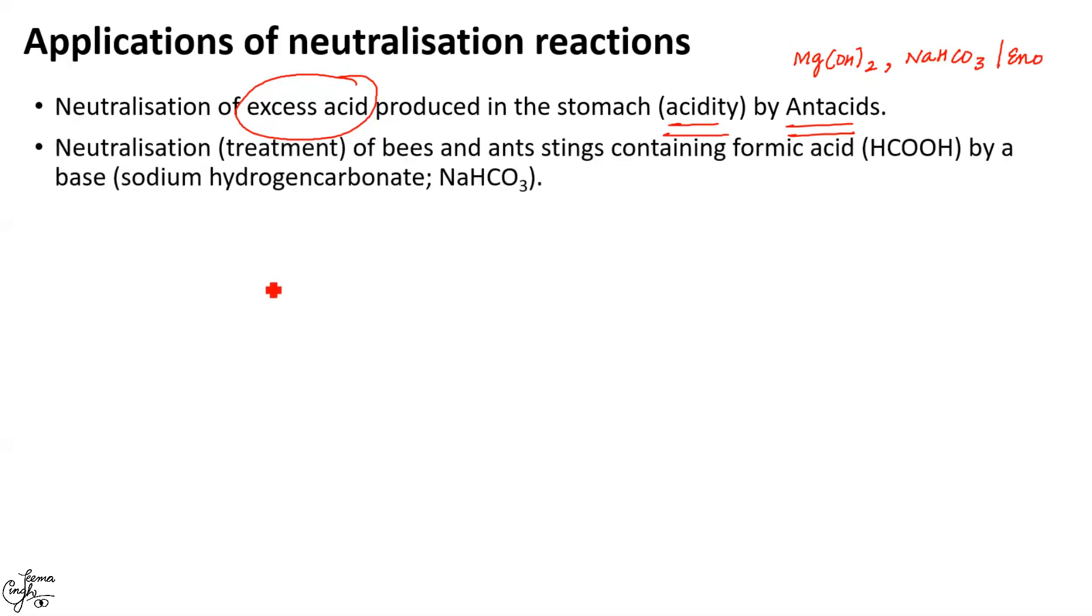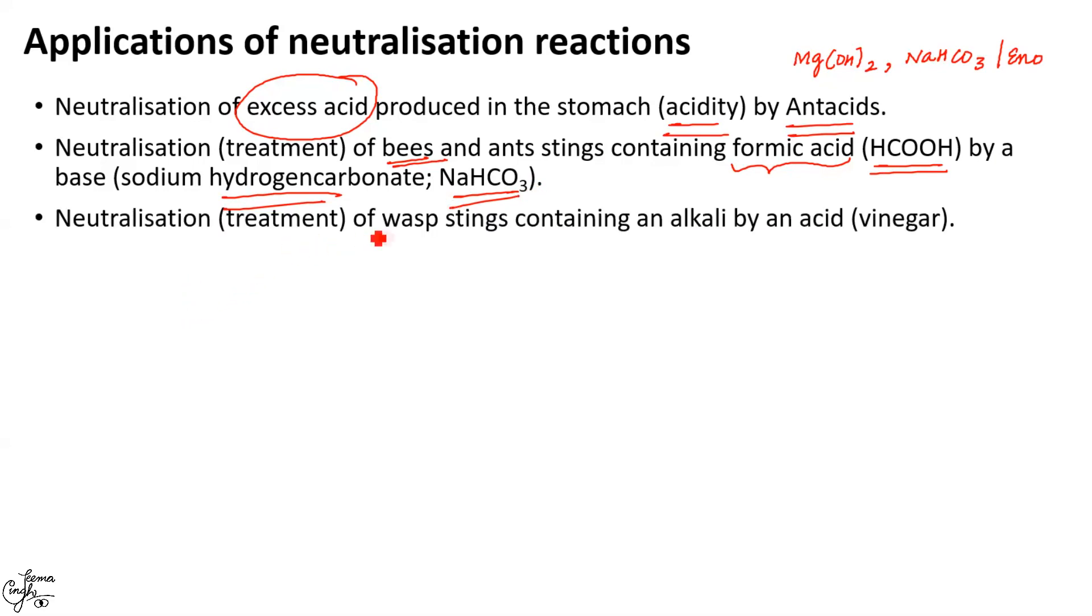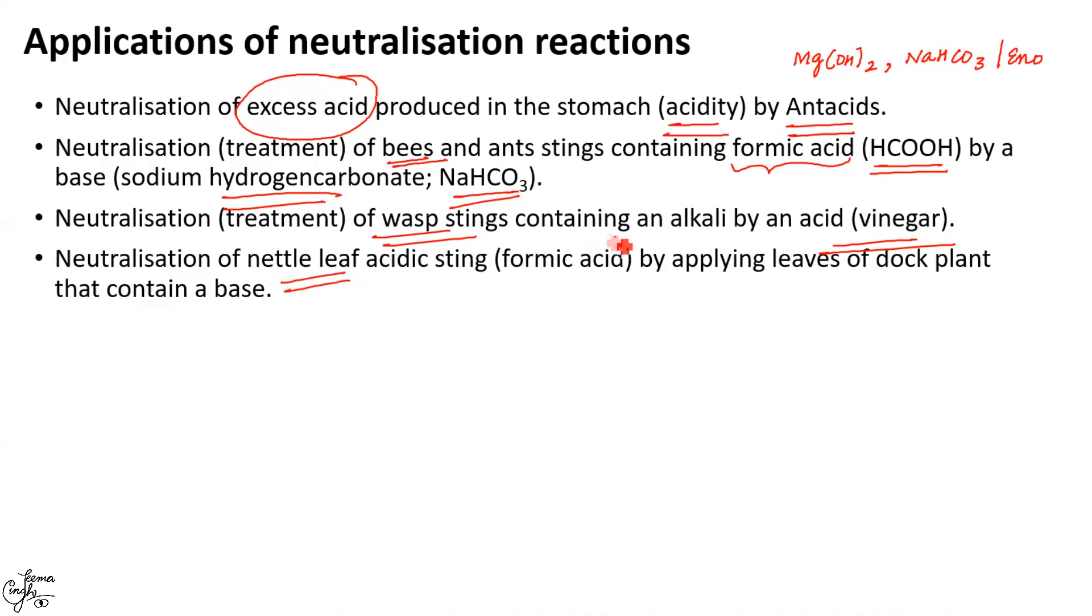Now, the stings of honeybees and ants inject formic acid with formula HCOOH also known as methanoic acid which can be treated by rubbing soap or using baking soda with formula NaHCO3 as both are basic in nature. Similarly, in case of wasp sting, an acid such as vinegar which is a dilute solution of acetic acid is used which neutralizes the base injected by the wasp. The same is the case when stung by nettle leaf which injects an acid which can be neutralized by a base or the leaves of dock plant that grows near this nettle plant and contains a base.